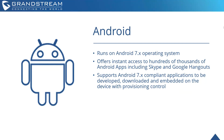When we say Android, the device runs on the Android 7.x operating system, which offers instant access to hundreds of thousands of Android apps — including Skype and Google Hangouts. Even though it's a desktop communications device, this is part of why we call it a multimedia device: it enables you to upload productivity-driving collaboration apps onto your desktop IP video phone, really pushing the capability and productivity of the user. It supports all Android 7.x compliant applications, and anything developed can be downloaded and embedded on the device with provisioning control.